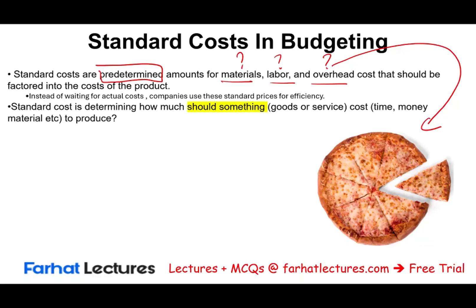So how much should something cost? It doesn't mean it may cost that much exactly — it might cost a little bit more, it might cost a little bit less — and we will see why standard costs would help us in making better decisions. But first we have to know how much something should cost, whether it's goods or services, in terms of time, resources, money, material, input, and so on, to produce that unit, creating what we call a static budget later on.